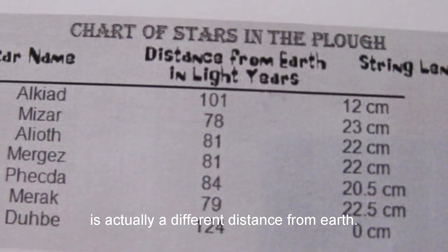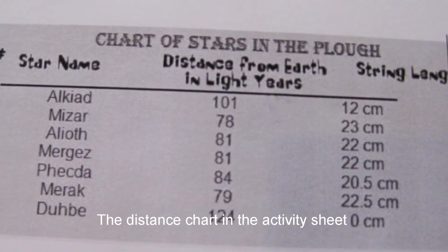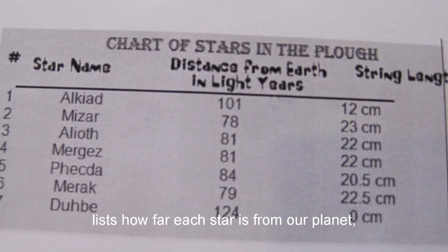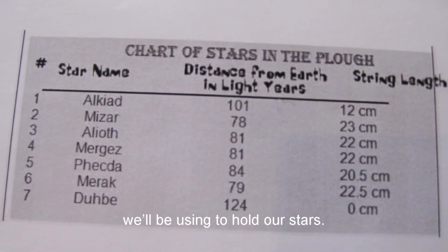Each of the seven stars in the Plough is actually a different distance from the Earth. The distance chart in the activity sheet lists how far each star is from our planet and gives a length for each piece of wool we'll be using to hold our stars.